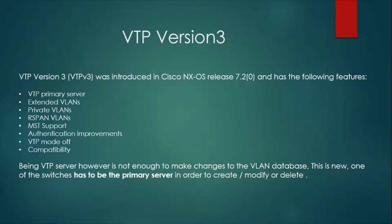When we configure VTP with a primary server — for example, in an environment with two switches in server mode — we can designate one as the primary server. The primary server is solely responsible for adding, creating, or deleting VLANs throughout the entire VTP environment.